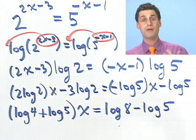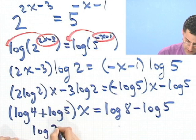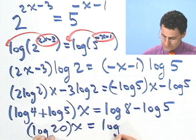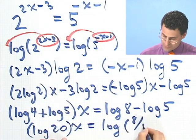Well, log 4 plus log 5, remember the laws of logs, that's just log of the product, so that's just log of 20x, and that equals log of, and the difference of logs is just the log of the quotient, so log of 8 over 5.